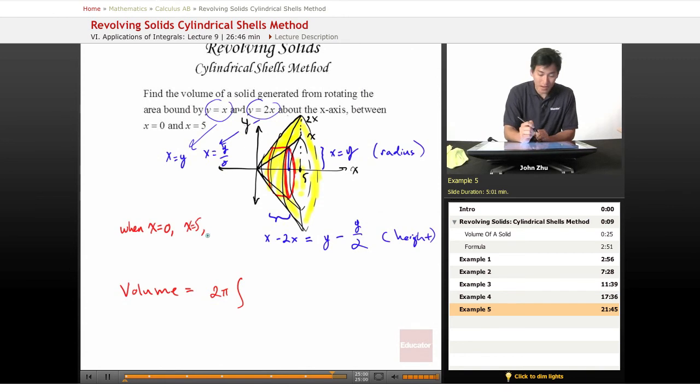Well, y equals 10 when x equals 5. So for this equation, when x equals 0, y equals 0. And for this equation, when x equals 0, when x equals 5, y equals 10. So we see that we're going to be integrating from 0 to 10.